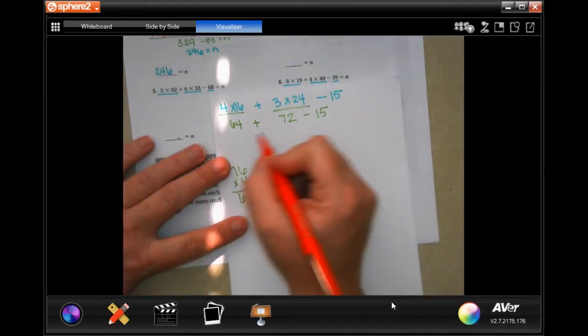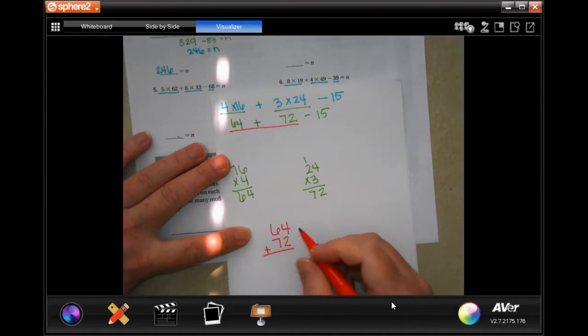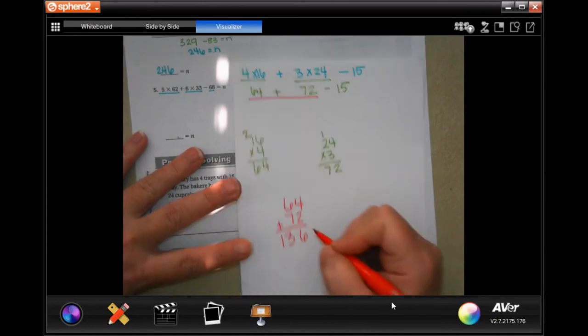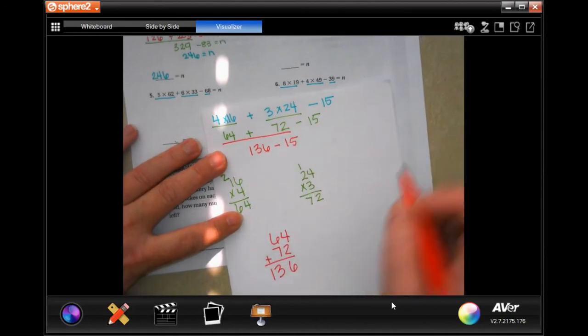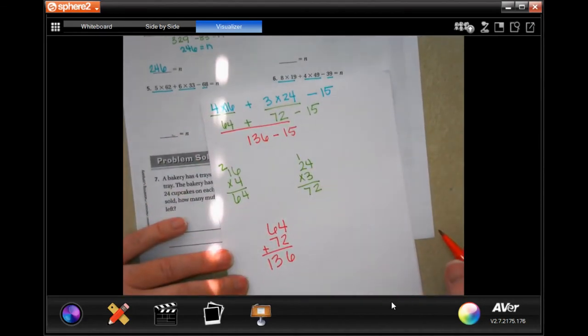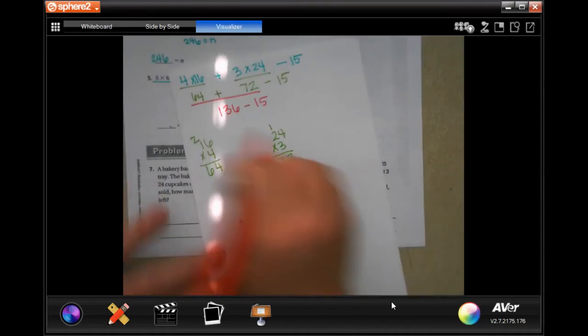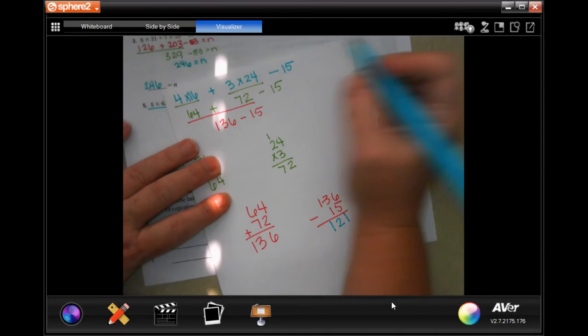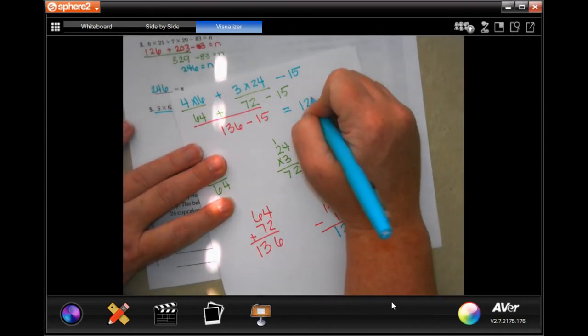So 64 plus 72, 64, 72, add them up. 4 plus 2 is 6, 6 plus 7 is 13, 136. So I still have minus 15. That didn't go anywhere. So over here, 136 minus 15. Got lucky, don't have to borrow. 6 minus 5 is 1, 3 minus 1 is 2, and I can bring down my 1. So 121.